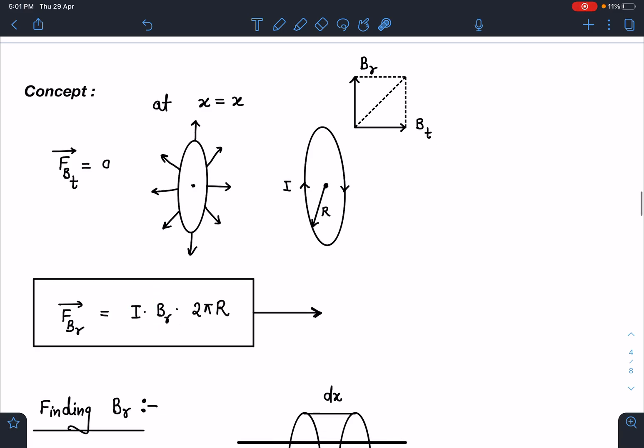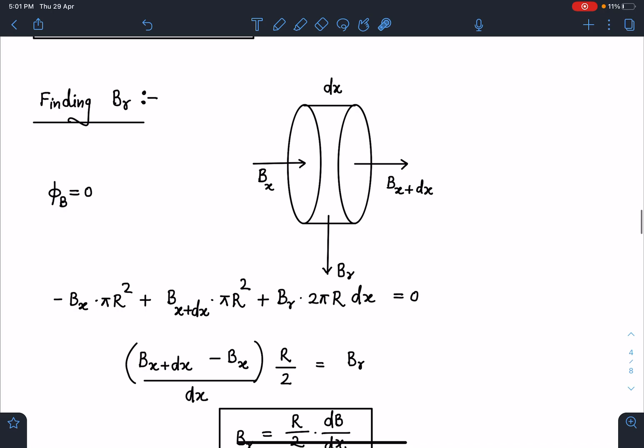Now finding Bᵣ, we can use Gauss theorem here. If we take a closed surface which is of the form of a cylinder, so at general x, field is Bₓ, and at x plus dx, field is B at x plus dx. That means I am taking this circle at x equal to x and I am taking this circle at x equal to x plus dx, and here I am taking this radius to be r, same as the ring. Otherwise r equal to r₀ we need to substitute.